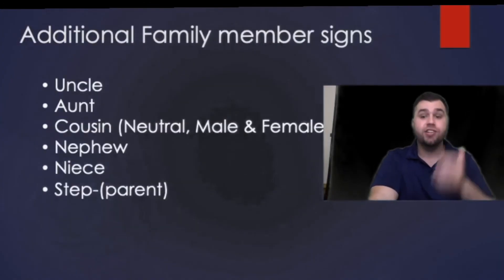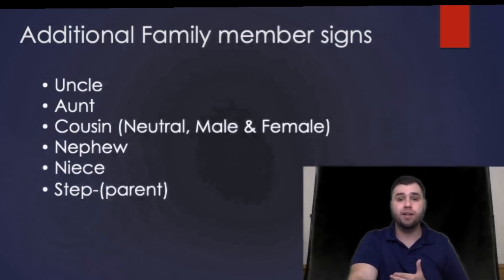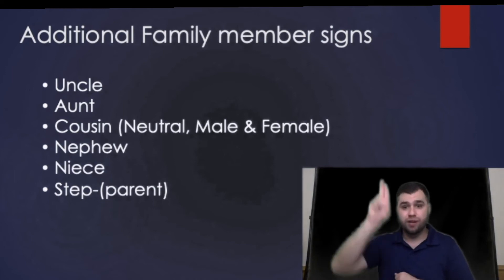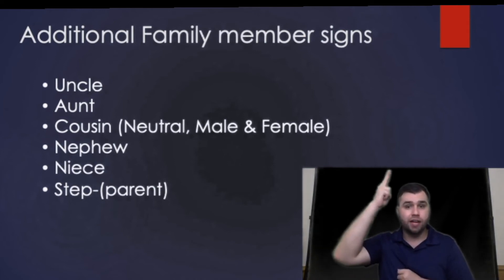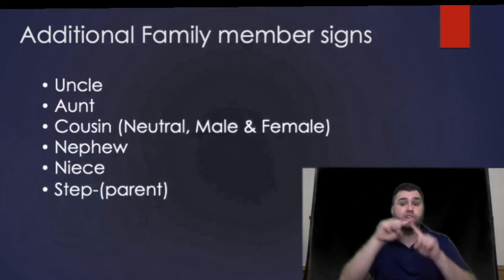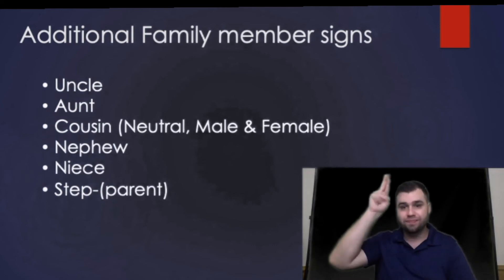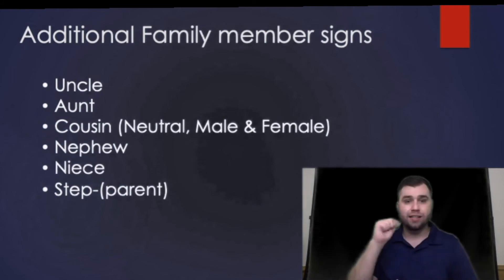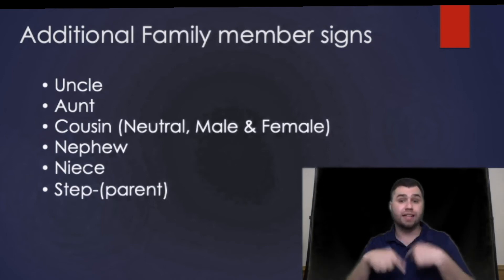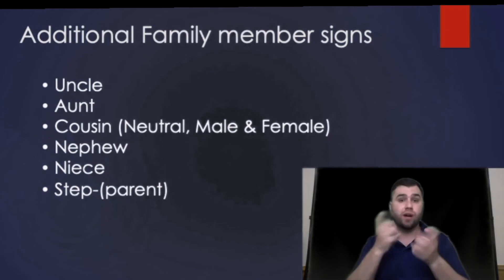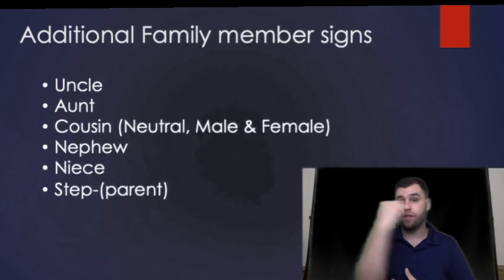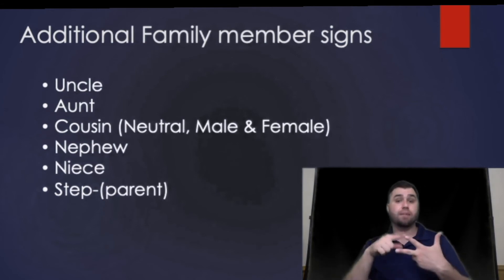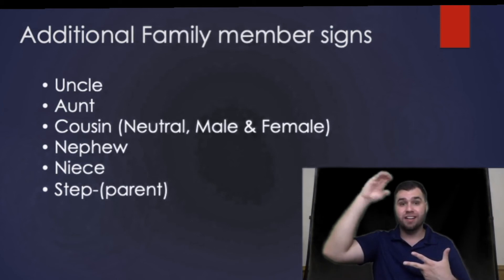Now we're going to add additional family member signs. We have uncle — make a U handshape up in the male region by your forehead and give it a small twist: uncle. Aunt uses an A handshape down by your chin and jawline: aunt. For cousin, there are three ways to sign it. In general — neutral — it starts in the middle section right on the dotted line and you do a little twist: cousin. If it's a male cousin, move it up to the male region: male cousin.